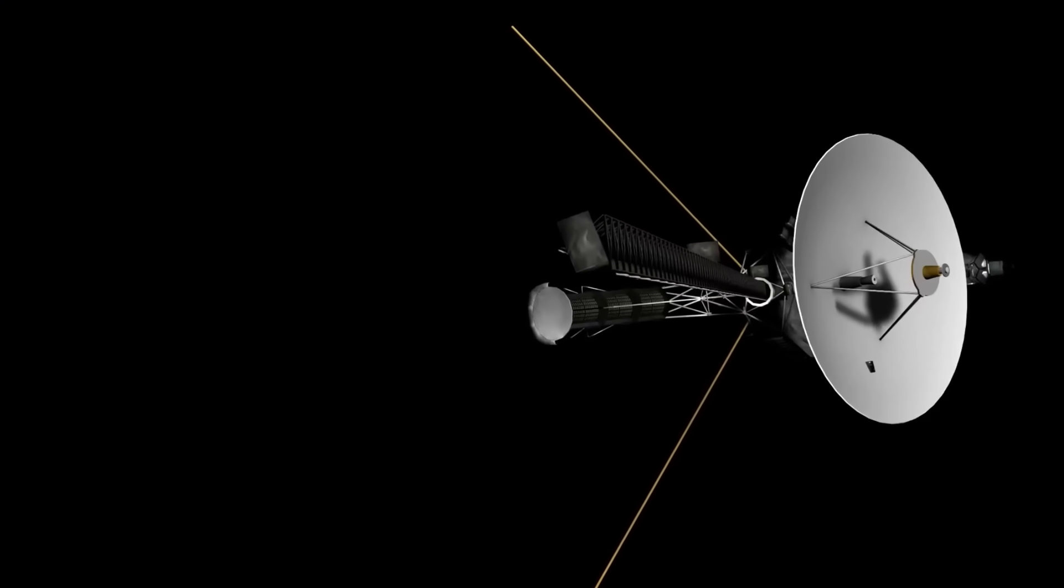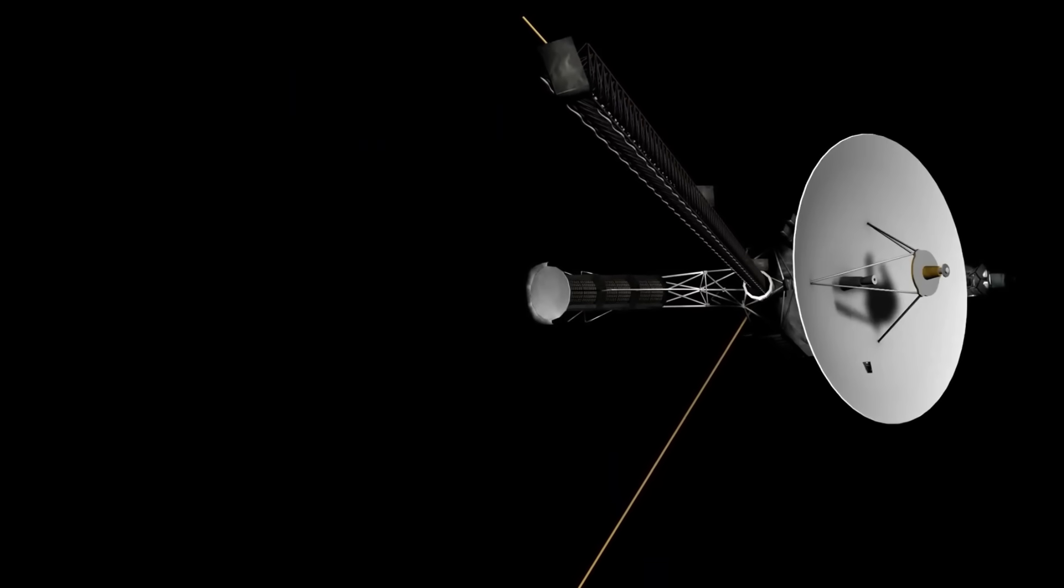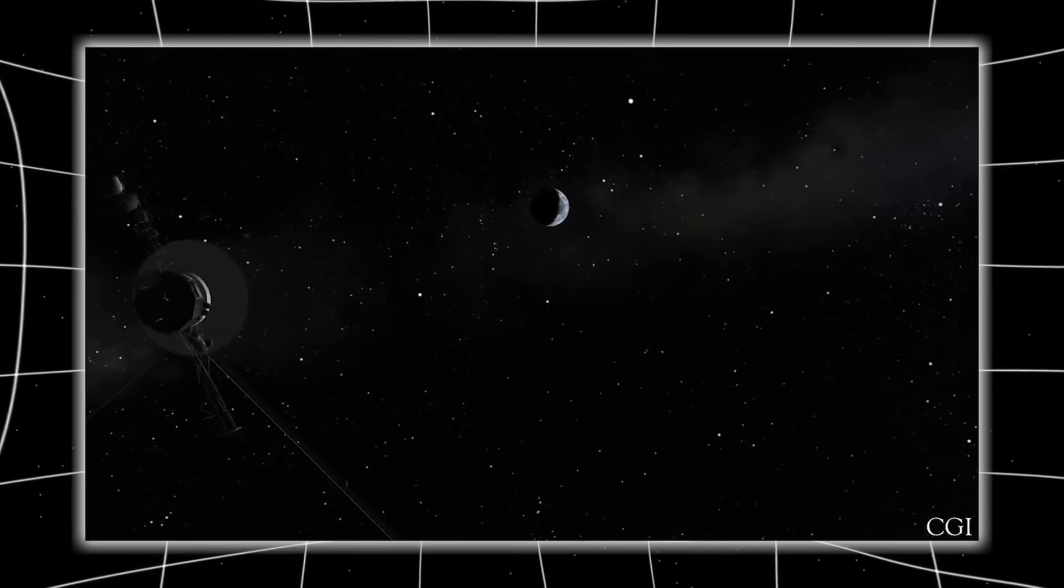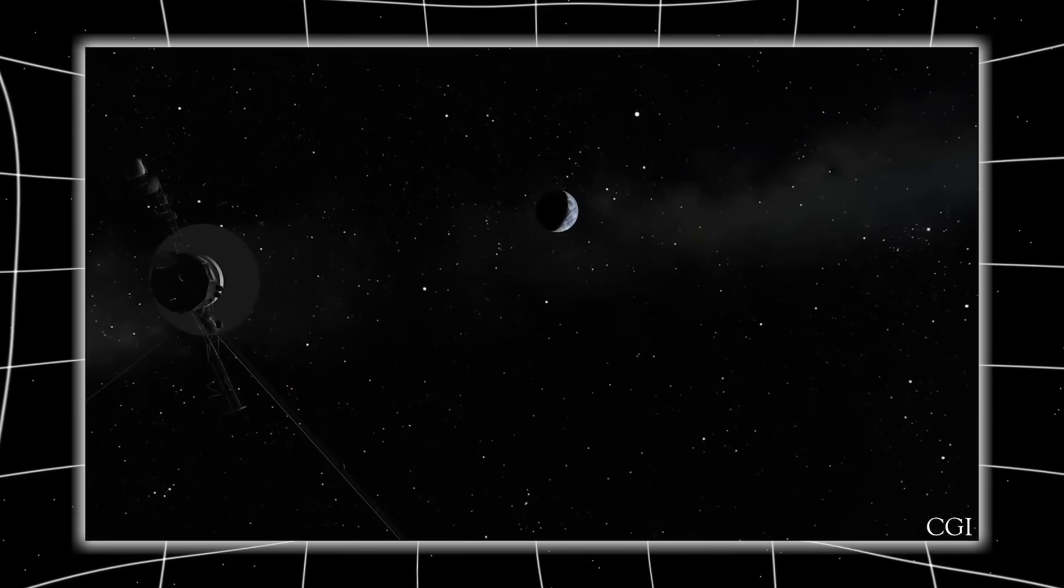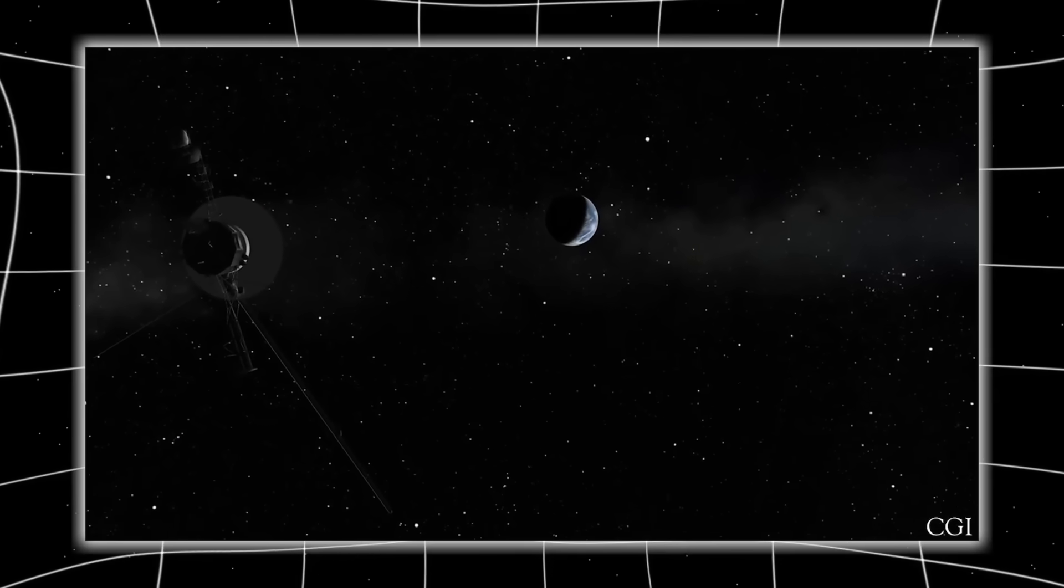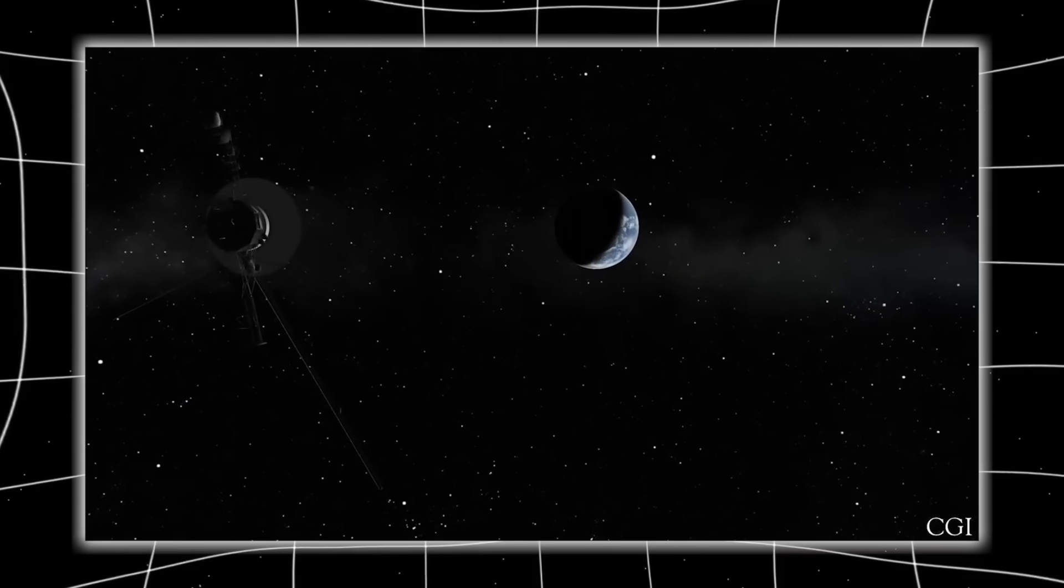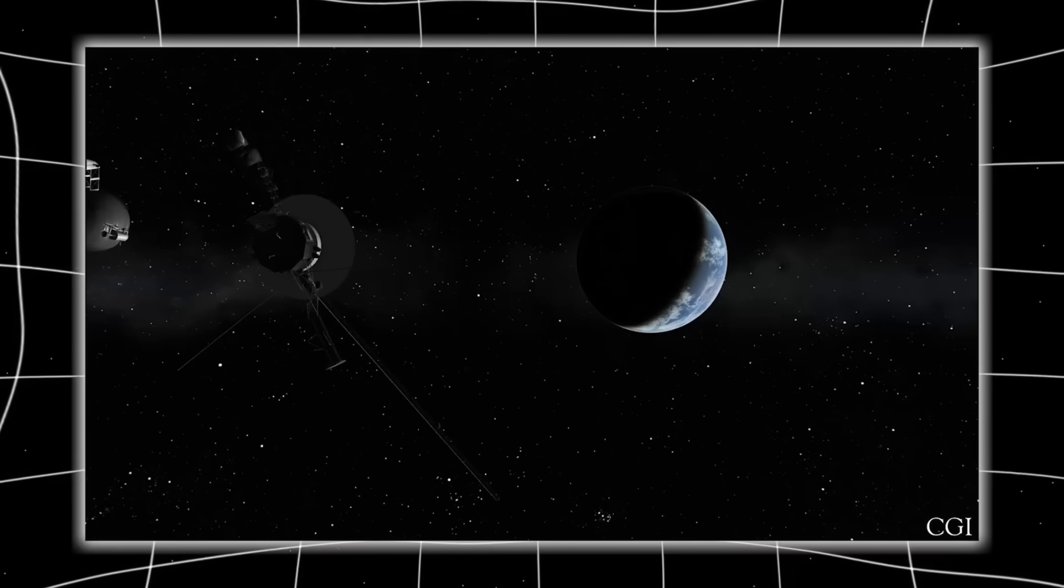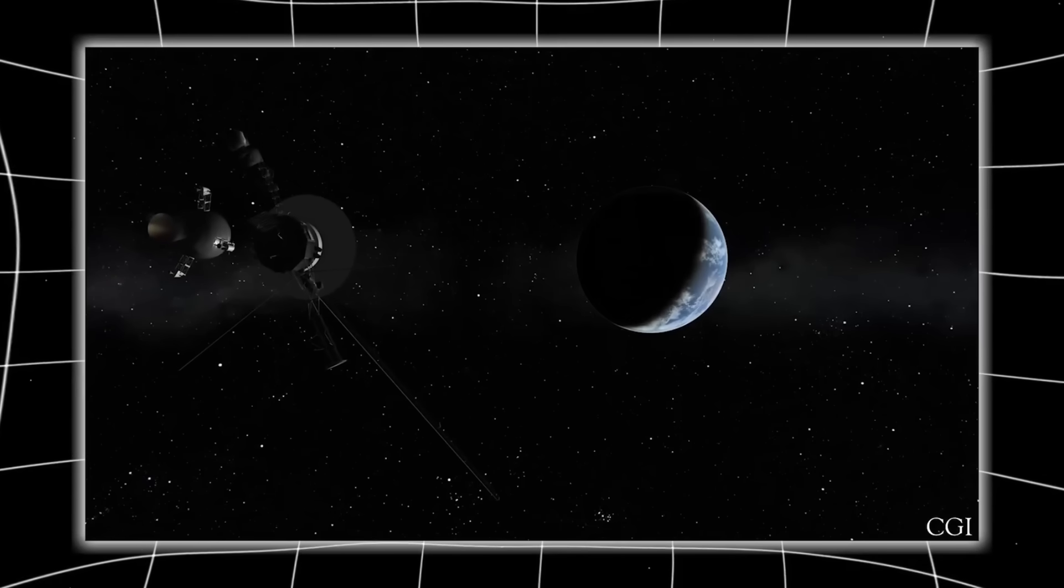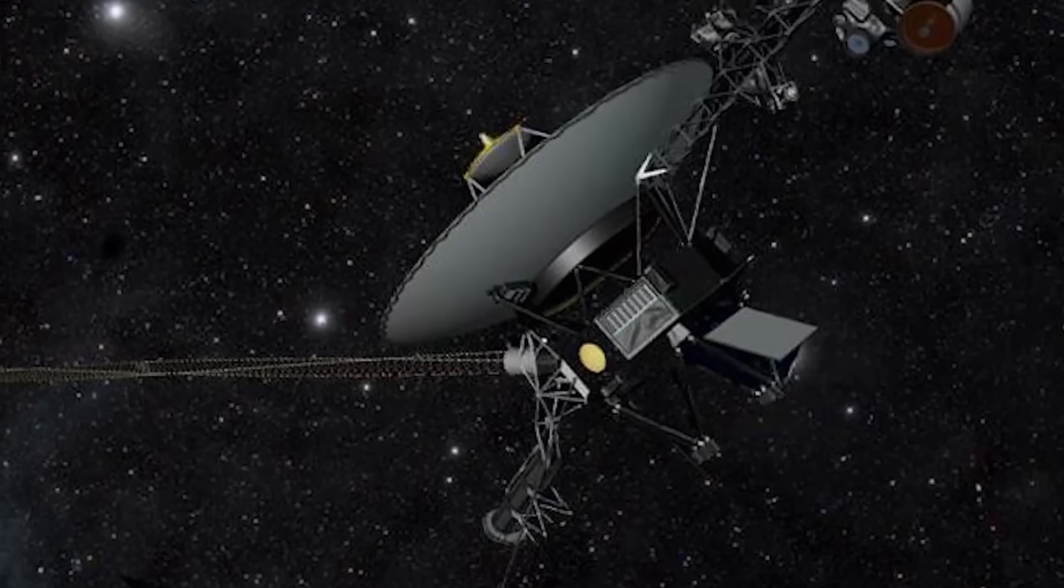Voyager 2 wasn't supposed to survive this long. It wasn't meant to send back revelations that would shake our understanding of the cosmos. And yet, here we are. Decades after its launch, drifting through the cold silence of space, it has pierced a boundary that was never meant to be crossed so easily. And what it found wasn't the peaceful emptiness we once imagined. It found change. It found pressure. It found structure. It confirmed what many quietly feared. Our solar system is not floating aimlessly in a void. It is shielded.